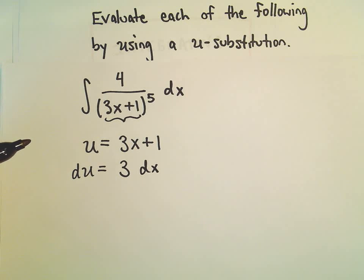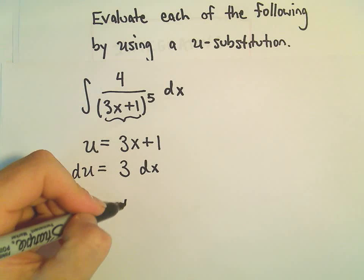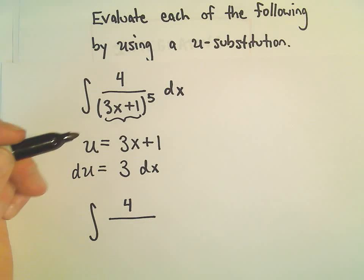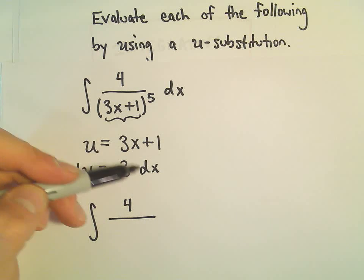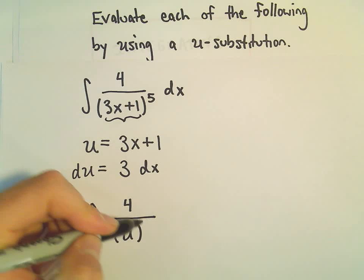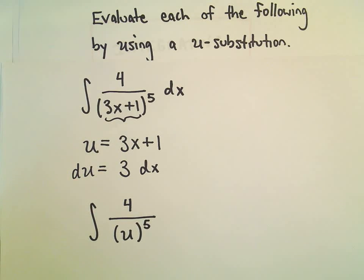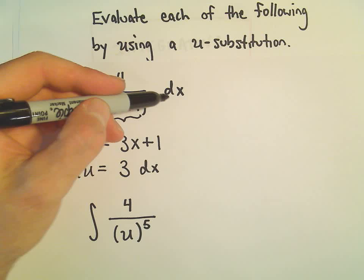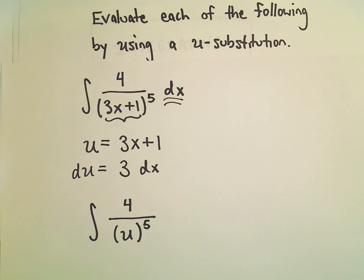Now, the way I think about it is, okay, so I'm going to start trying to relabel my original problem using this stuff. So the 4, the 4 is still there. Nothing really incorporated that. We're calling the stuff in the parentheses, that's what we're calling u. Okay, so we still have our 5th power. Nothing really got rid of that. Now, I need to replace the dx with something.